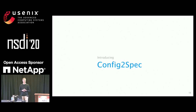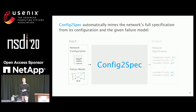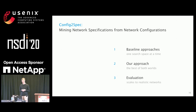That's where config-to-spec comes into the picture. Config-to-spec takes the configuration, takes your failure model, and provides you with the full specification of that network. I will first talk through two straw-man approaches that tackle the problem from different angles, then show how we can combine them and leverage their respective strengths, and finally look at how config-to-spec performs.